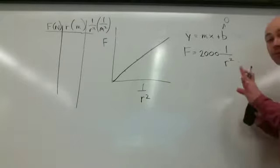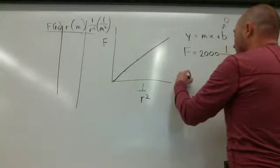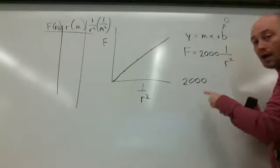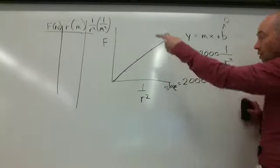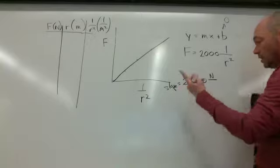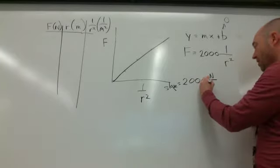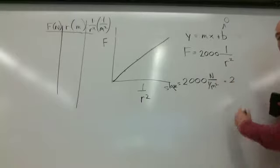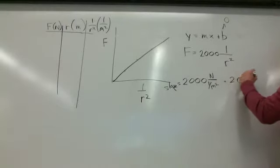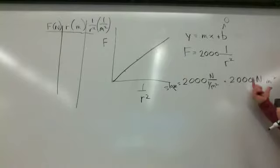Now, the other thing you got to be careful of, if you want to do slopes, the slope of that 2,000 would be 2,000 rise, newtons, divided by the run, which is 1 over meters squared, which is really 2,000 newton times meters squared. Because divide, same thing as multiplied by the reciprocal.